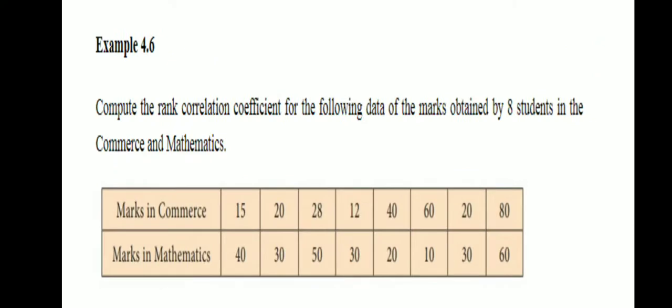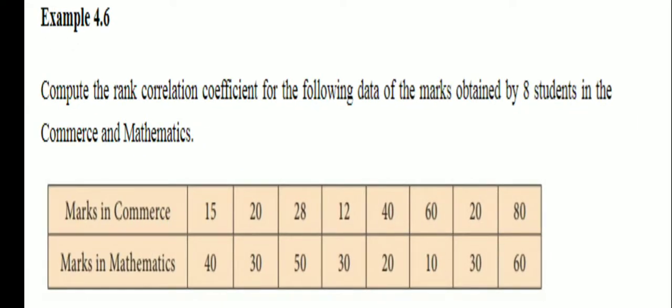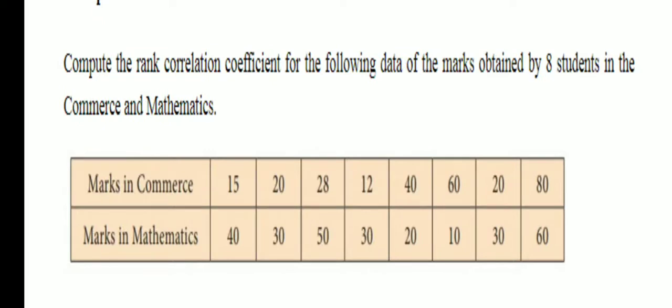Example: Compute the rank correlation coefficient for the following data of marks obtained by eight students in Commerce and Mathematics. Marks in Commerce: 15, 20, 20, 12, 40, 60, 20, 80. Marks in Mathematics: 40, 30, 50, 30, 20, 10, 30, 60. Here in Commerce, 20 is repeated two times, and in Mathematics, 30 is repeated three times.